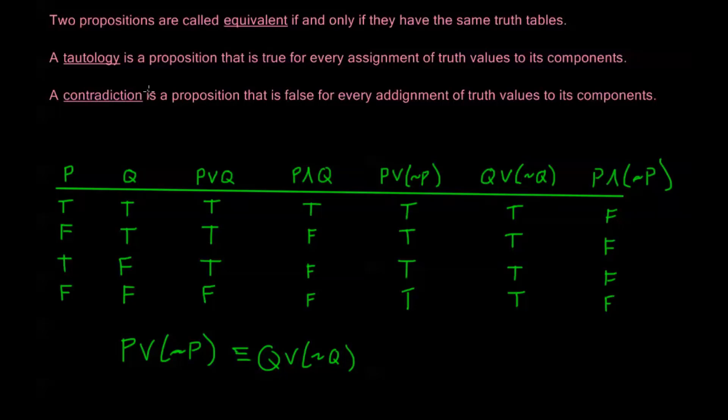A tautology is a proposition that is true for every assignment of truth values to its components. We see that both P or not P and Q or not Q are tautologies. These are universal truths. These are statements that are always going to be true. It doesn't matter if P is true or false. It doesn't matter if Q is true or false. These are both going to be true all the time.